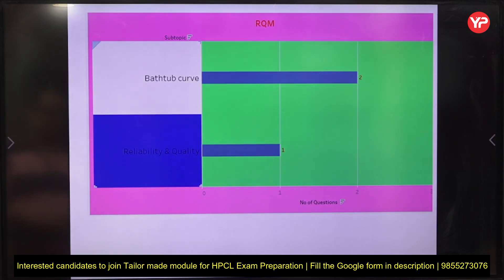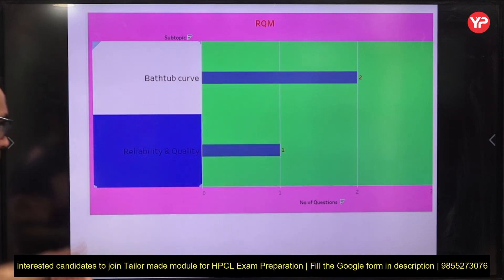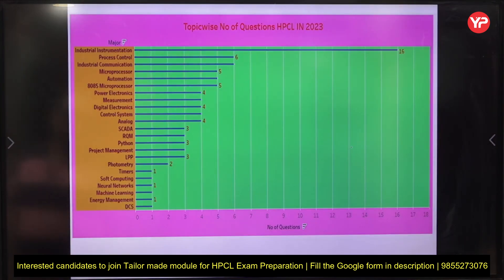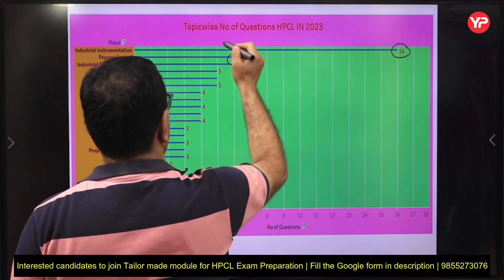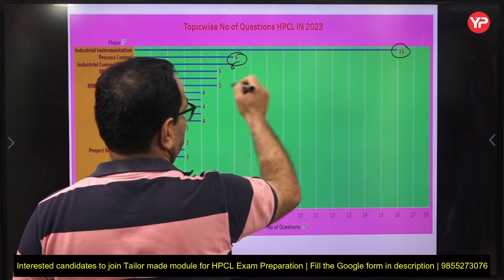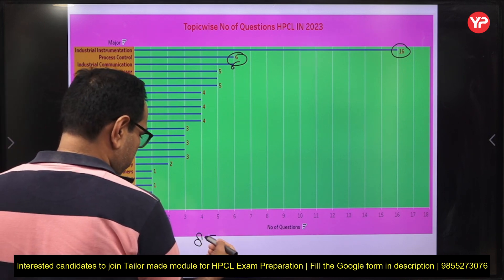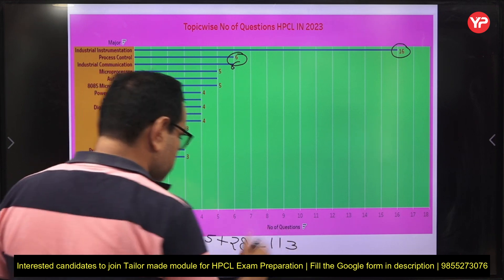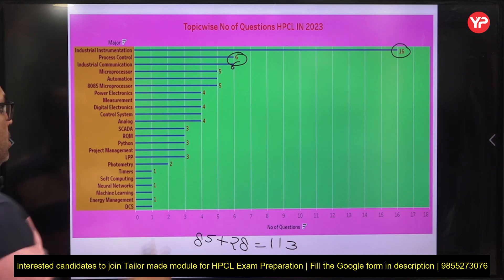For reliability and quality management, there were two questions from the bathtub curve — please prepare that. One question covered basic concepts of reliability and quality. Combining non-tech (85) plus industrial instrumentation (16) plus process control (6) plus industrial communication (6) gives 113, which is a good number to qualify the written exam.